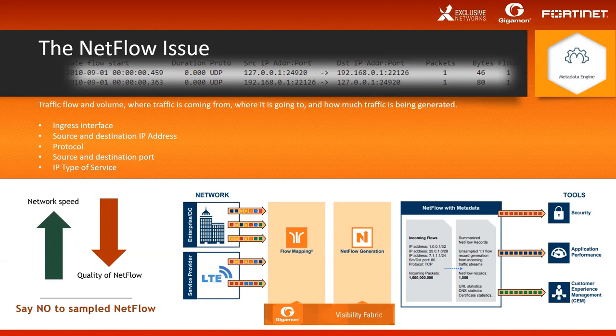While routers and switches are capable of generating NetFlow metadata, they were not designed to do that for every packet — creating challenges and limitations. Router or switch generated NetFlow is sampled, inconsistent in format, and requires processing overhead that can introduce service degradation, latency, and dropped packets. Additionally, NetFlow is only layer 4, and organizations need layer 7 application-level metadata to achieve pervasive, actionable visibility and successful analysis. Gigamon can generate both layer 4 and layer 7 metadata. The key differentiation is that NetFlow is unsampled, and it supports NetFlow formats including version 5, 9, IPFix, and CEF for seamless integration with standard-based collectors, storage devices, and SIEMs like FortiSIEM, Splunk, and QRadar.